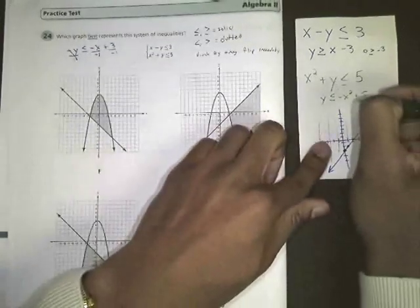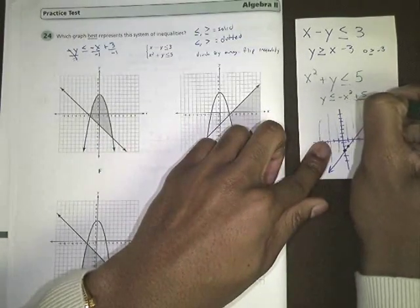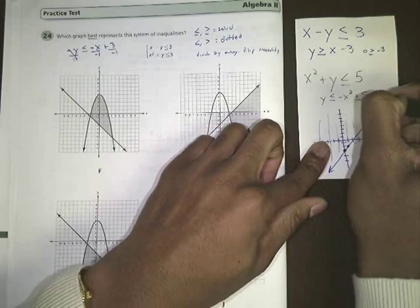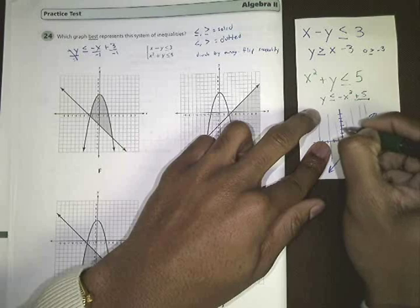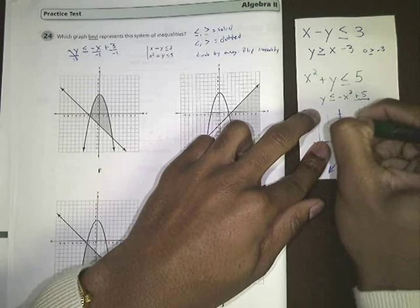So all your choices should have an n going upside down. And then this number on the outside is a positive 5. So that means that you need to move your parabola up to 5. So you need to start 1, 2, 3, 4, 5. Your vertex is going to be up here at 5.